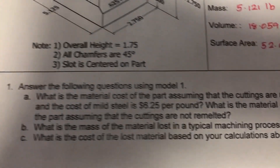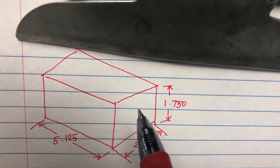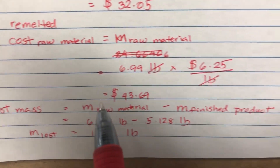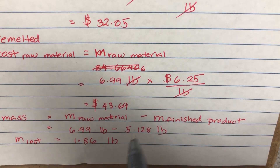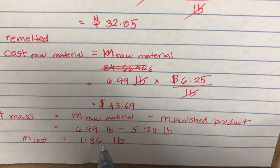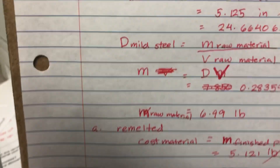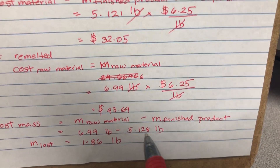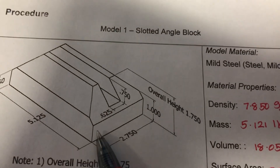Question 1B: What is the mass of material lost in a typical machining process? To solve for that, lost mass equals mass of the raw material minus mass of the finished product: 6.99 pounds minus 5.128 pounds equals 1.86 pounds. The 6.99 pounds is the mass of the raw block, and 5.128 pounds comes from drawing the slotted angle block.